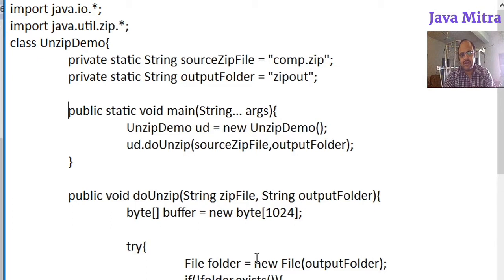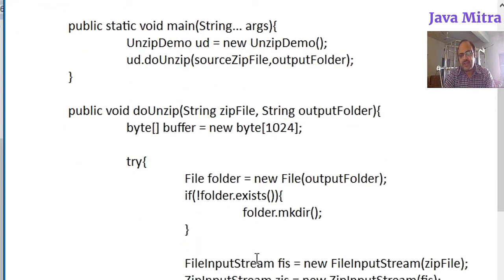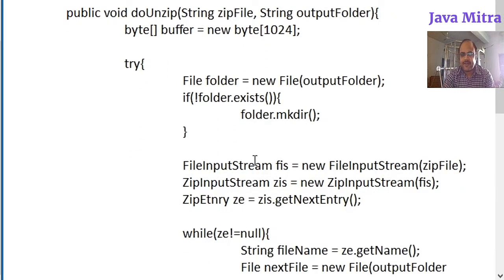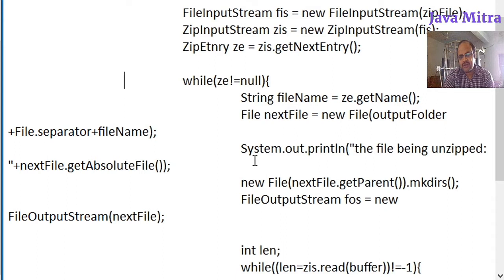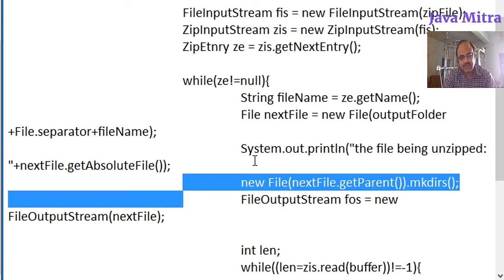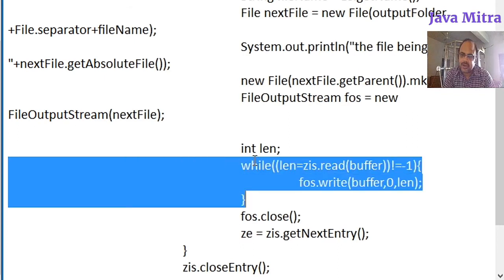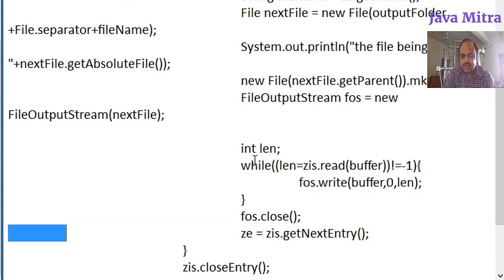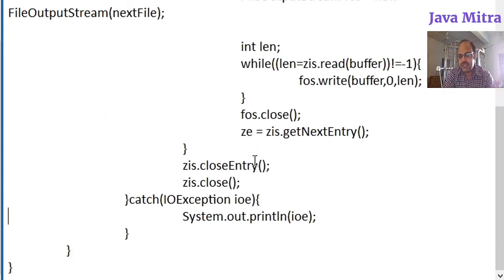To recap: first we kept the source file and destination folder, then created the doUnzip method where we set a byte array buffer to write content into the FileOutputStream. We created the output folder if it doesn't exist, then created a ZipInputStream to get each ZipEntry using getNextEntry(). We loop until the ZipEntry is null, get the file name, create the folder if needed, write the content of the selected file into fos, close fos, and continue with the next zip entry.